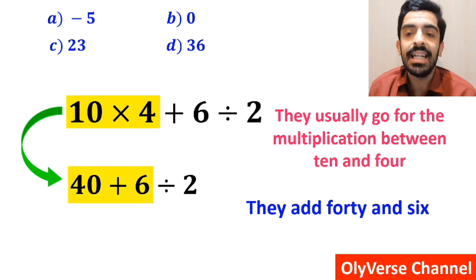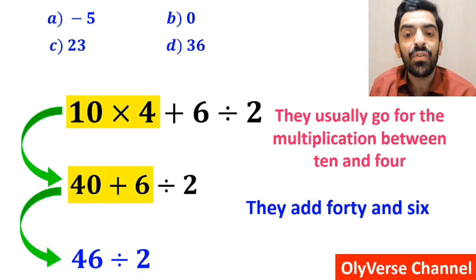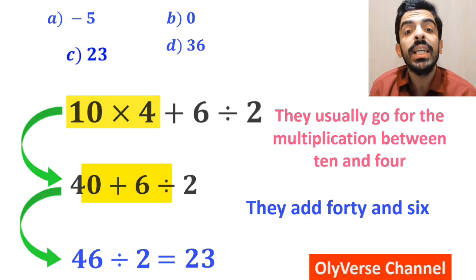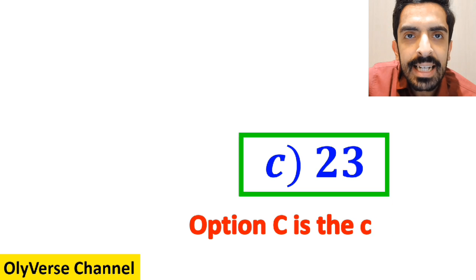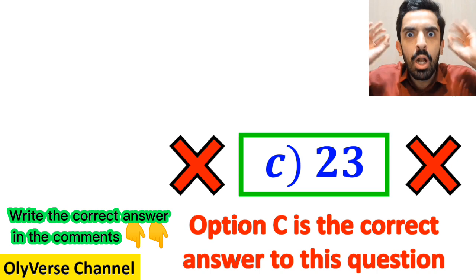Then they add 40 and 6 and write this expression as 46 divided by 2 which finally gives them the answer 23, and without any hesitation they quickly say that option C is the correct answer to this question. However, this answer is absolutely wrong.